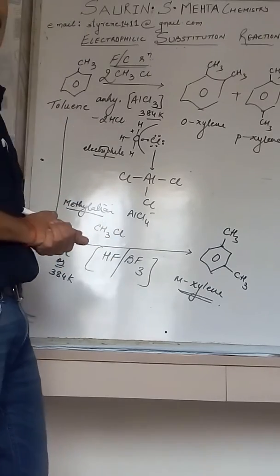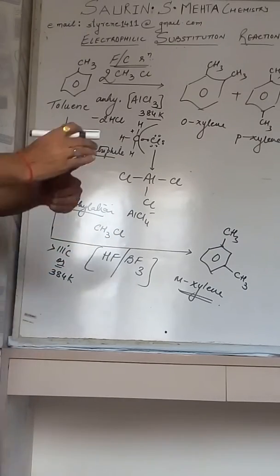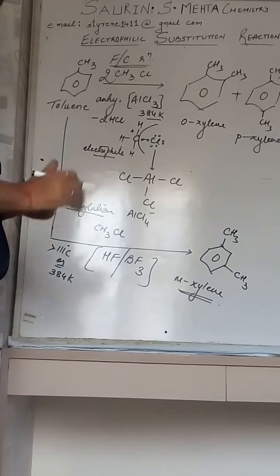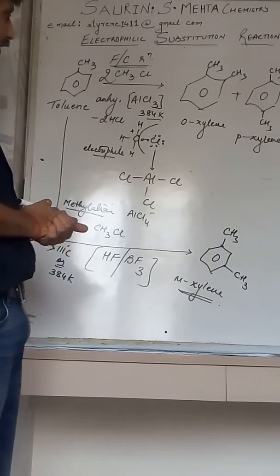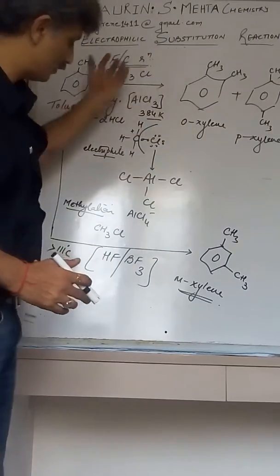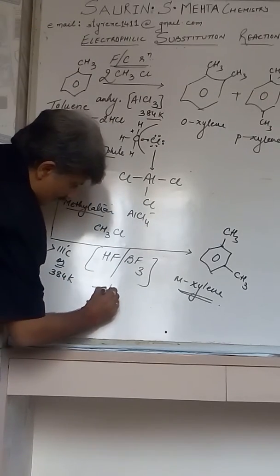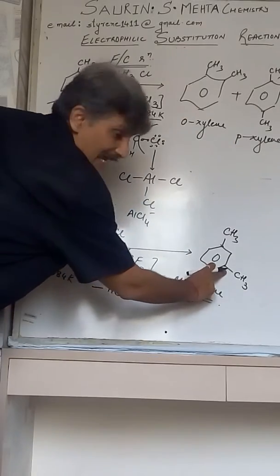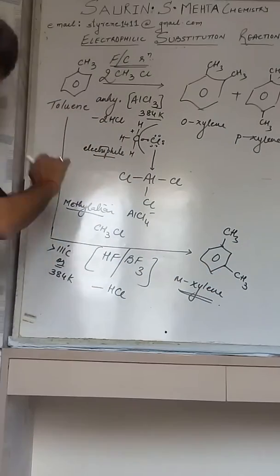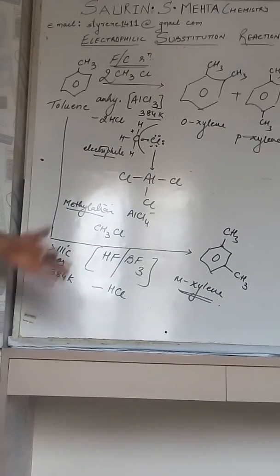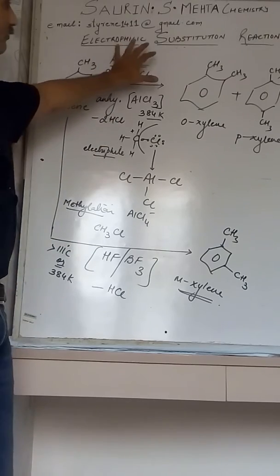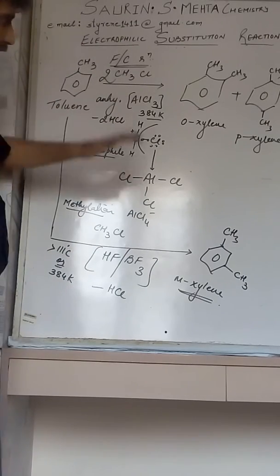By the way, I think you all are very much thorough with the reaction. The byproduct also remains the same as HCl because the H which got eliminated combines with the Cl of methyl chloride. So this is your Friedel-Craft alkylation reaction of toluene.